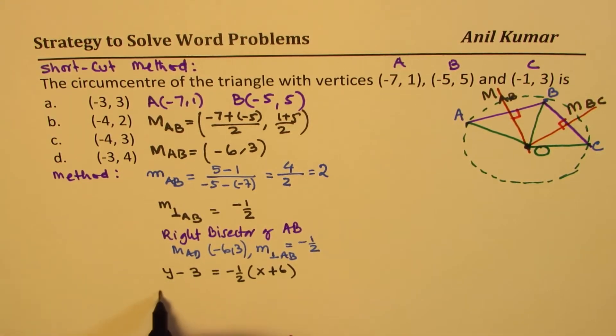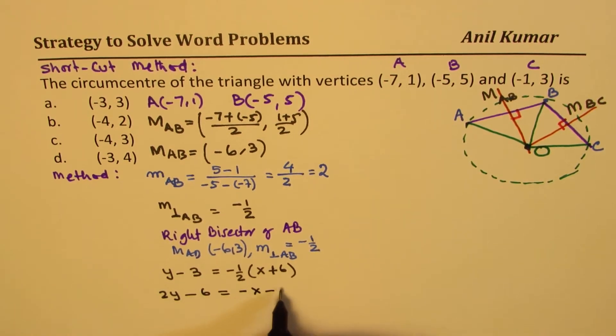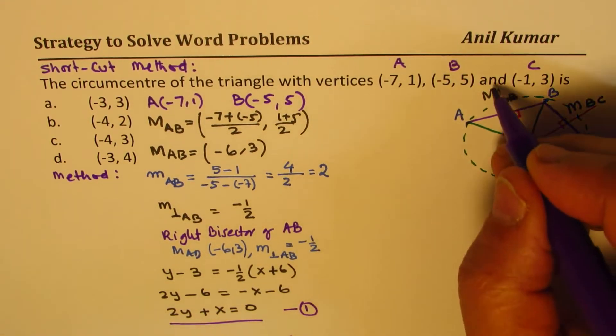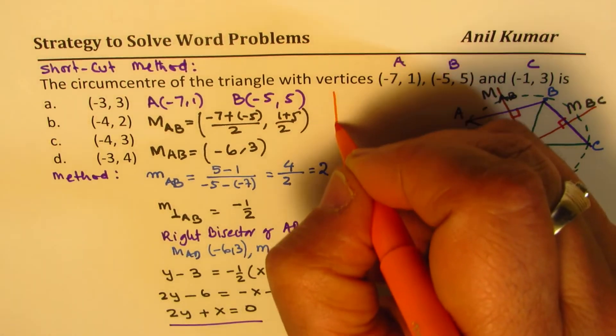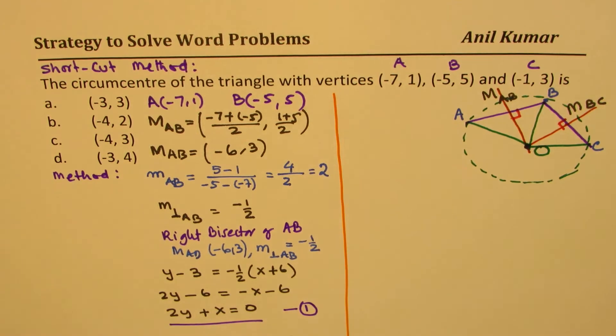Now we can simplify this, cross multiply. So we get 2y - 6 equals to -x - 6. Bring them together x and y terms, we get 2y + x equals to 6 - 6 will be 0. So we get one of our equations. So that is one equation, which we got for the right bisector of AB.